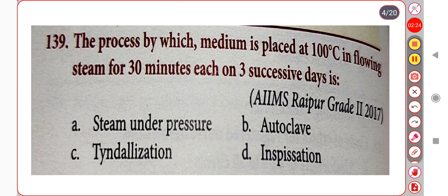Next question. The process by which moist heat is applied at 100 degrees Celsius in a flowing stream for 30 minutes each on three successive days is: Option A. Steam under pressure. Option B. Autoclave. Option C. Tyndallization. Option D. Inspissation. Correct answer is Option C: Tyndallization.